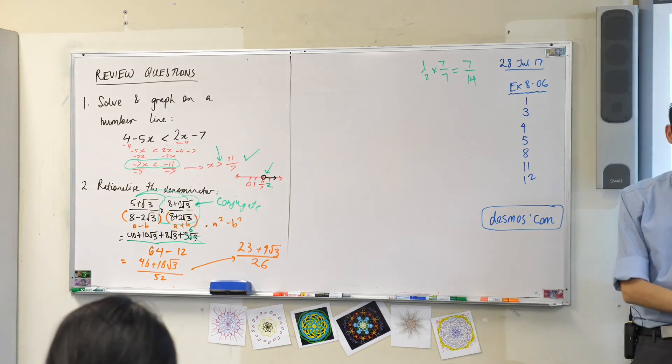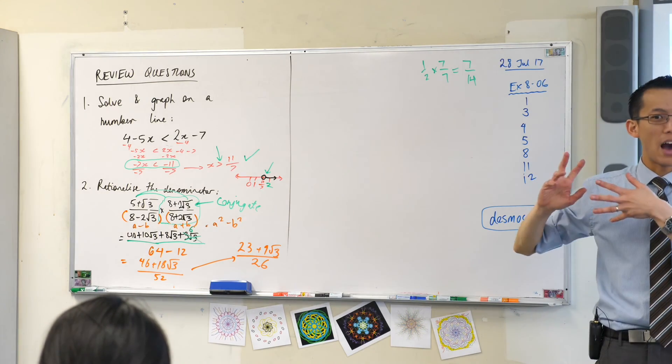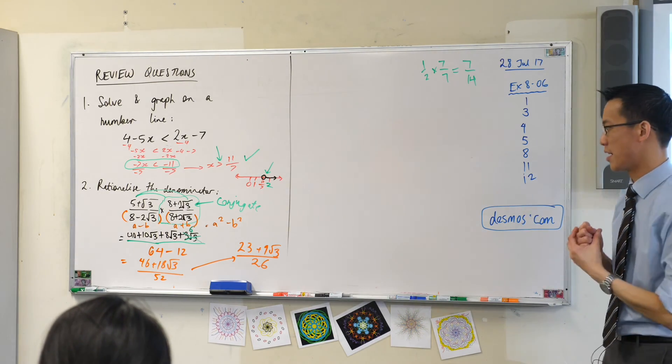So that was tricky. I guess that's what happens when I make up numbers. But there you go. I've successfully rationalized the denominator.